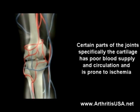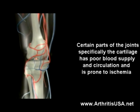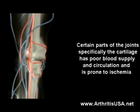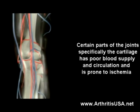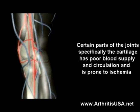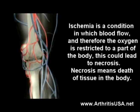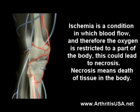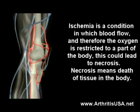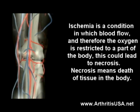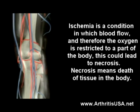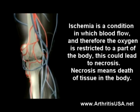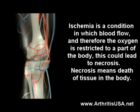Certain parts of the joints, specifically the cartilage, have a poor blood supply and are prone to ischemia. Ischemia is a condition in which blood flow, and therefore oxygen, is restricted to part of the body. This can lead to necrosis. Necrosis means the death of tissue inside the body.